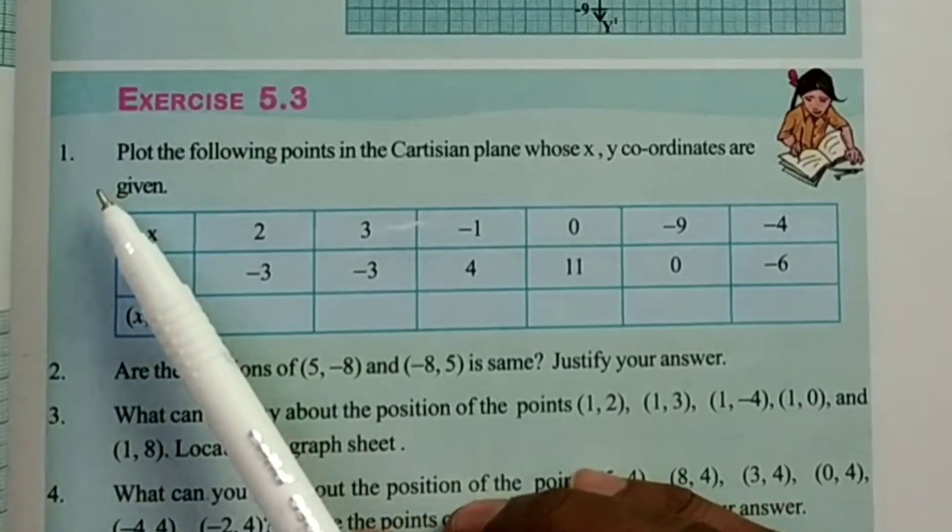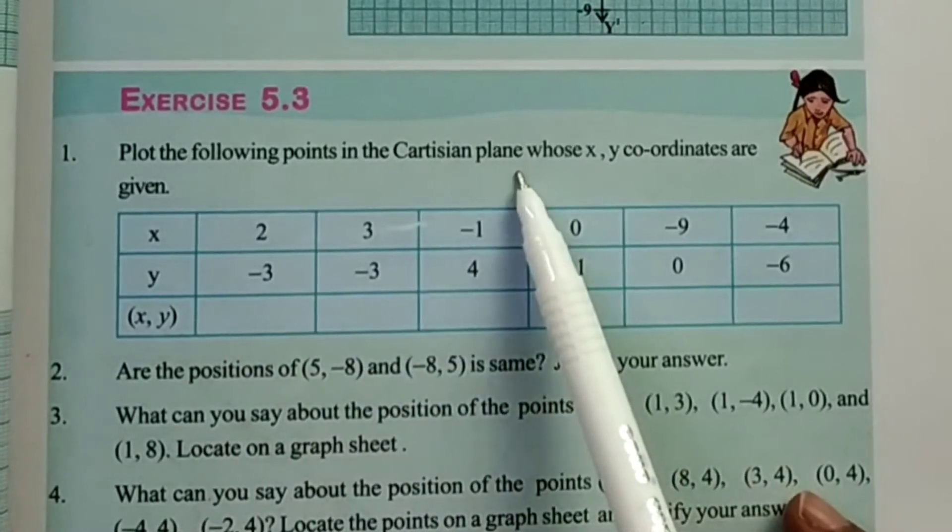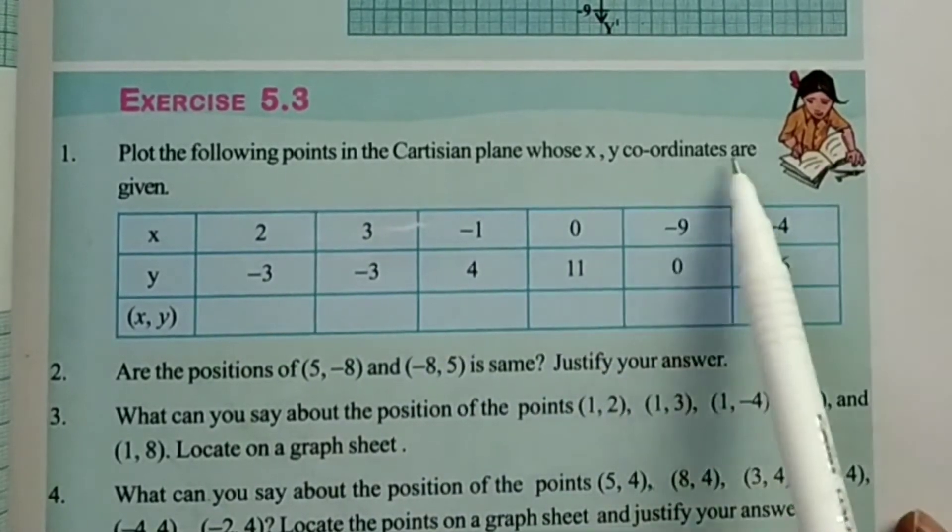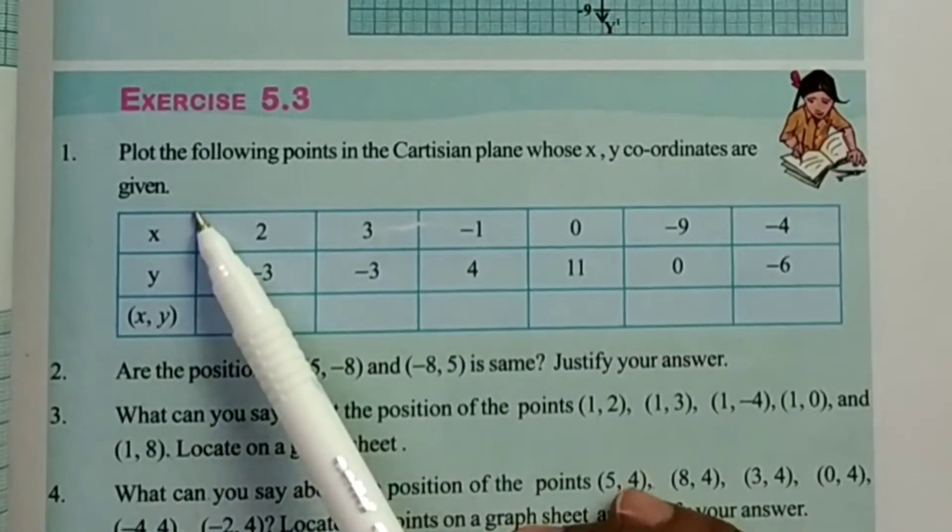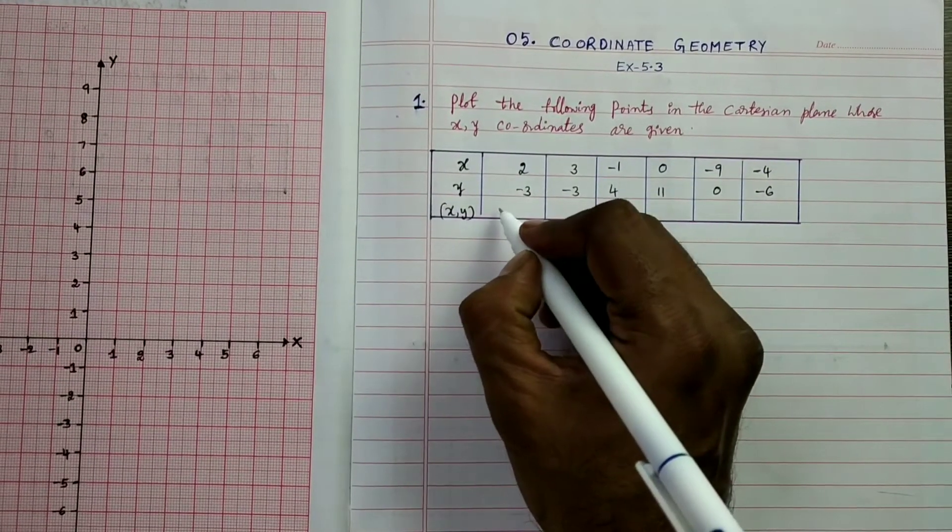The first problem is: plot the following points in the Cartesian plane whose x,y coordinates are given. Here, xy coordinates are given in the form of ordered pairs.